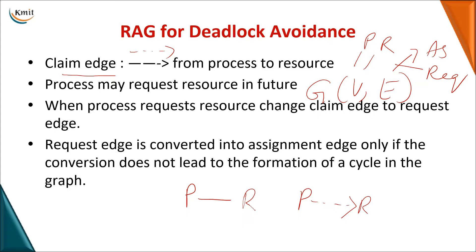If a process is currently requesting the resource, the claim edge will be converted to a request edge. When the resource is finally allocated to the process, the request edge will be converted to an assignment edge. After assignment, when the process releases the resource, the assignment edge is converted back into a claim edge. This is the process of conversion from one edge to another.